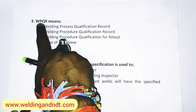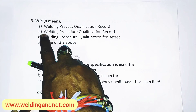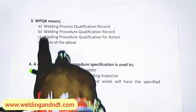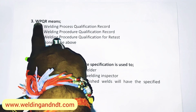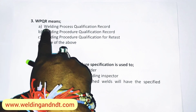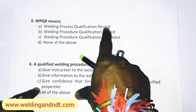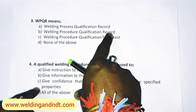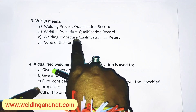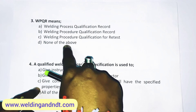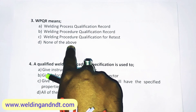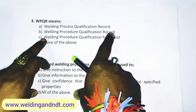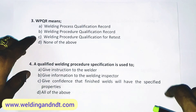Question number 3 asks: WPQR means? This is a very simple question and I've explained it in the video lecture also. WPQR is Welding Procedure Qualification Record. Option A is welding process qualification record. Option B is welding procedure qualification record. Option C is welding procedure qualification for your test. Option D is none of the above. The answer is B — welding procedure qualification record.